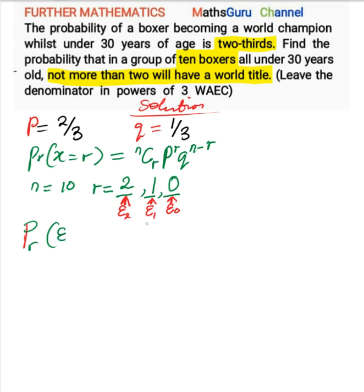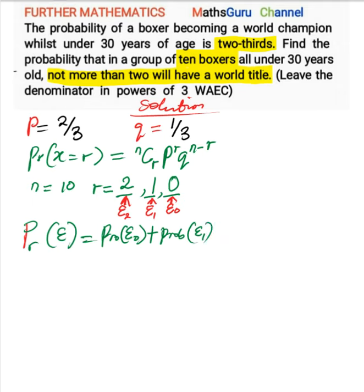Since we represented the events as E0, E1, and E2, the total probability E will be equal to the probability of E0 plus the probability of E1 plus the probability of E2. These are what we're going to find out and sum together.